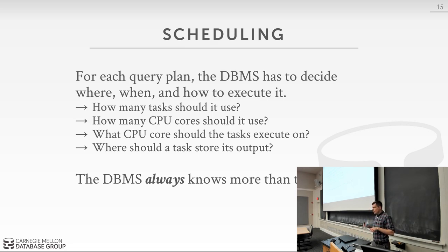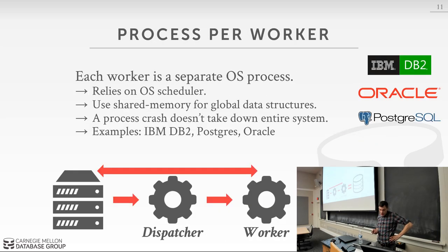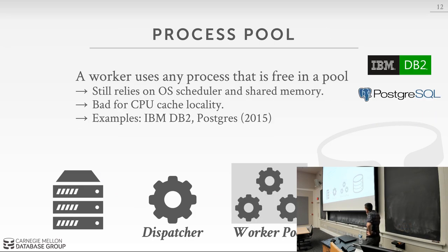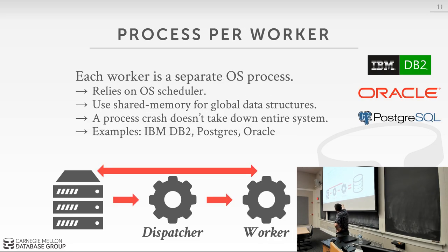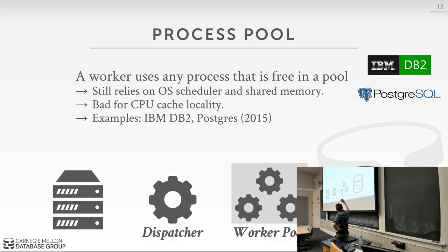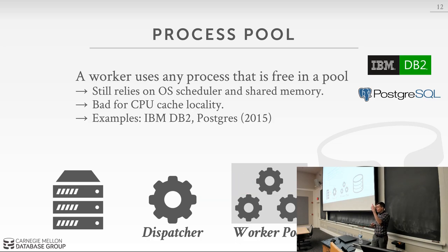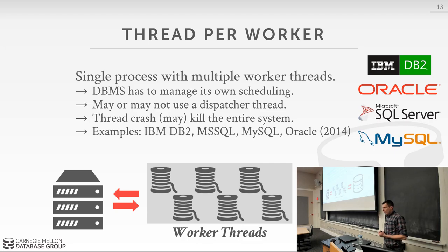On the advantage of process pool versus process per worker: with process per worker, one query shows up and only that single worker can execute it. With the process pool, free workers are available and the assigned worker can hand off pieces of work to those others, who execute and send results back. So process per worker is one worker equals one query, while the pool allows one query to be executed across multiple workers. You can do the same thing with the thread pool model.